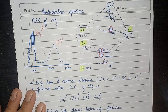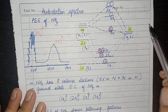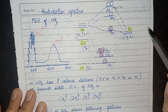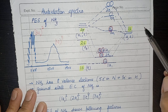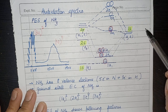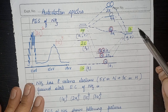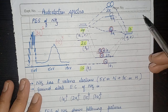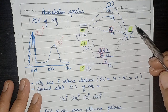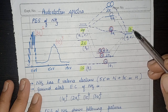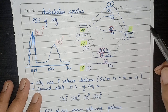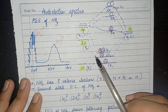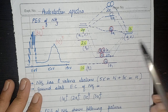Welcome dear students. We started photoelectron spectroscopy and have seen photoelectron spectra of various compounds, for example nitrogen, oxygen, HF molecule. We have completed the principle of photoelectron spectroscopy. One topic was remaining: that is the photoelectron spectra of the nitrogen molecule, and by student demand I am covering this topic.